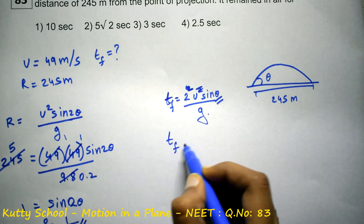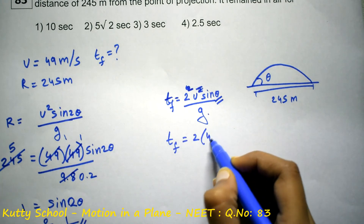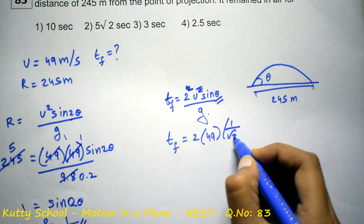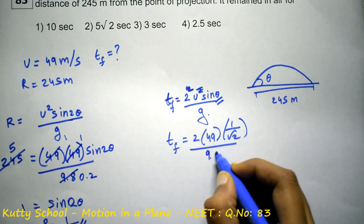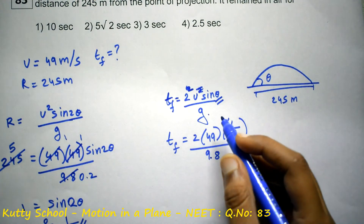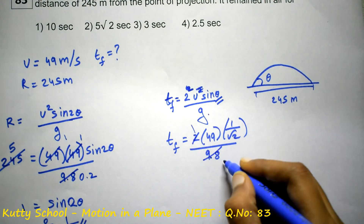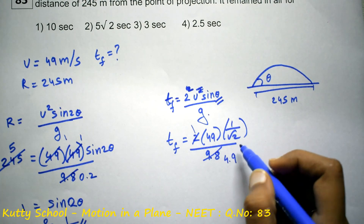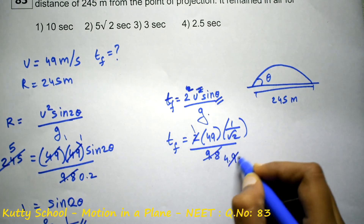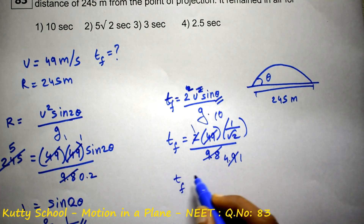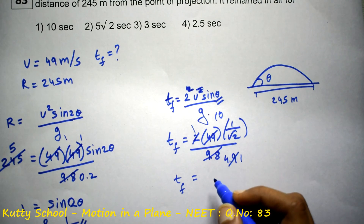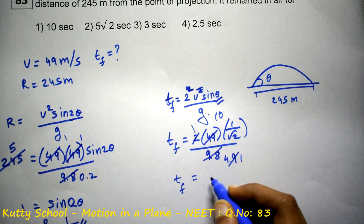Therefore, the time of flight is equal to 2 × u × sinθ / g = 2 × 49 × sin45° / 9.8 = 2 × 49 × (1/√2) / 9.8. Simplifying, 49 / 4.9 gives 10, so time of flight = 10 / √2.